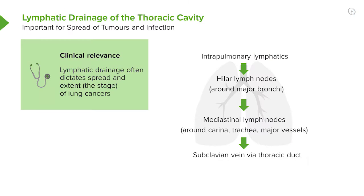From the hilar lymph nodes, drainage goes to mediastinal lymph nodes, and from there to the thoracic duct and back into the venous circulation.